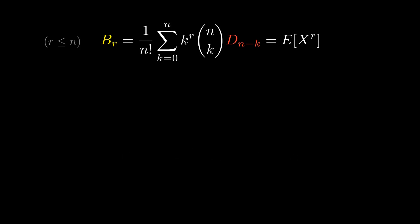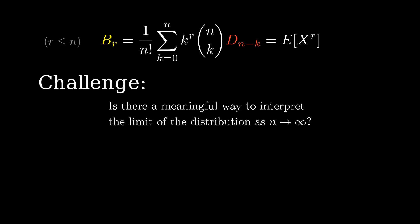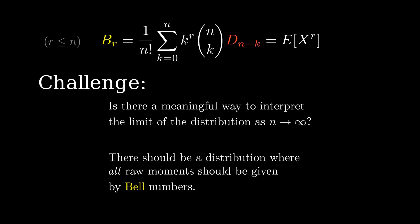Careful, this is a tough one. The rth bell number is the moment for the fixed-point distribution provided n is greater than or equal to r. Is there some meaningful way to interpret the limit of the distribution as n goes to infinity? If everything is right with the world, and you math very carefully, you should end up with some sort of distribution where all the moments are provided by bell numbers. I feel like I may have seen that somewhere.